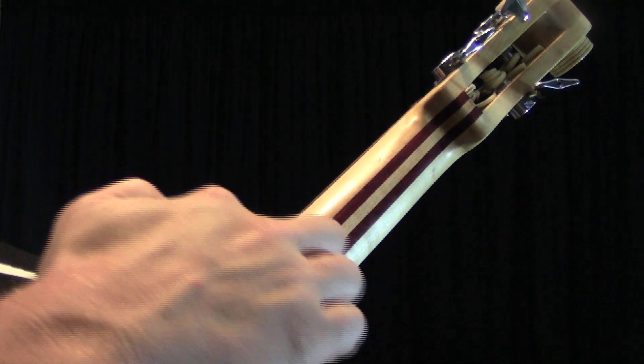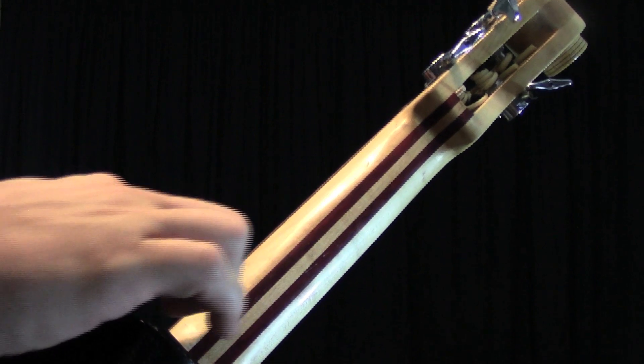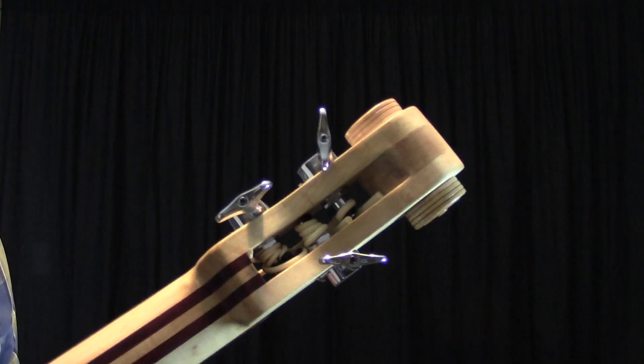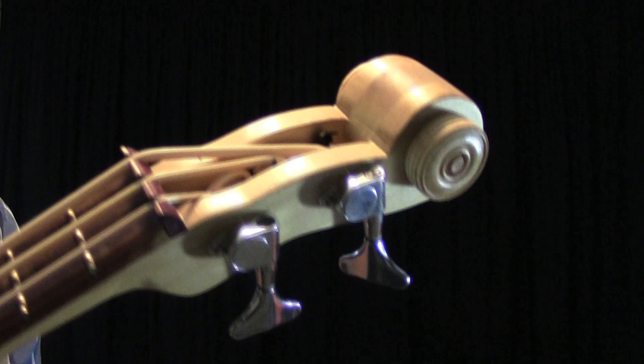I made the neck by laminating five pieces of wood together, three maple and two padauk. The headstock is slotted with some design elements similar to that of an upright bass.